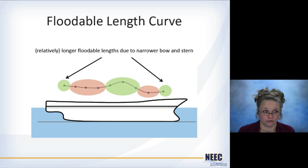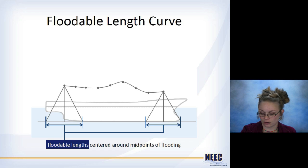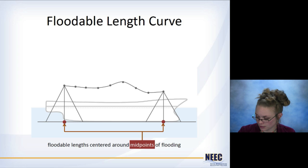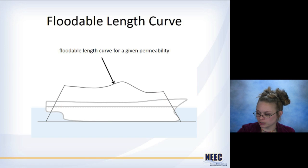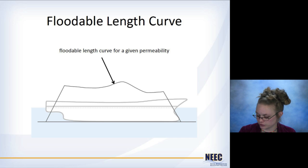The floodable length curve is built with the floodable lengths centered around the midpoints of the flooding. You can then draw little triangles, which will come into play shortly. Once you clean it all up, this is the floodable length for a given permeability. This is the traditional way you would see a floodable length presented — with diagonal lines showing how it changes, going back down at the bow and stern. You can also produce the floodable length curve for different permeabilities for those spaces.